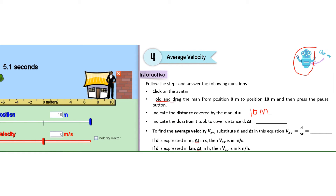Indicate the duration it took to cover the distance D — it's shown on a digital chronometer like a stopwatch. Let's say it took approximately 5 seconds. Now, to find the average velocity, substitute D and delta T in the equation: V average equals D divided by delta T — distance divided by duration. So 10 meters divided by 5 seconds equals 2 meters per second.